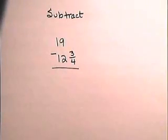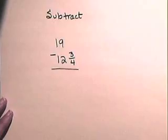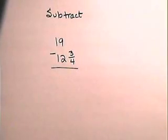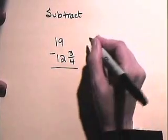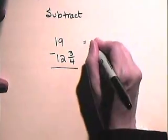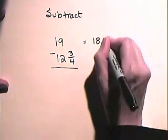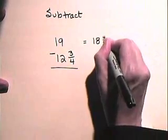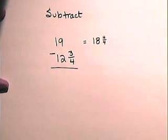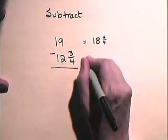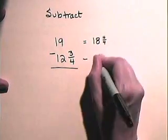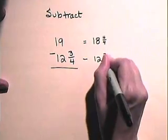Now, let's subtract 12 and three-fourths from 19. You'll see that 19 is a whole number, so 19 will have to be written as a mixed number. We're going to borrow one from 19 and make the whole part 18 and the fractional part will be four-fourths. Because 18 and four-fourths is the same thing as 19, and from that we are going to subtract 12 and three-fourths.